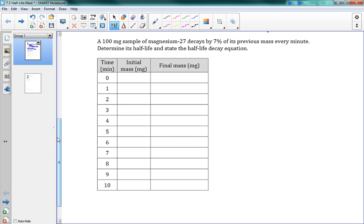Excellent. The next one here is, we're going to fill out a table. It says a 100 milligram sample of magnesium-27 decays by 7% of its previous mass every minute. We want to determine its half-life and state the half-life decay equation. So we're saying at time 0 we start with 100 milligrams. Cool.